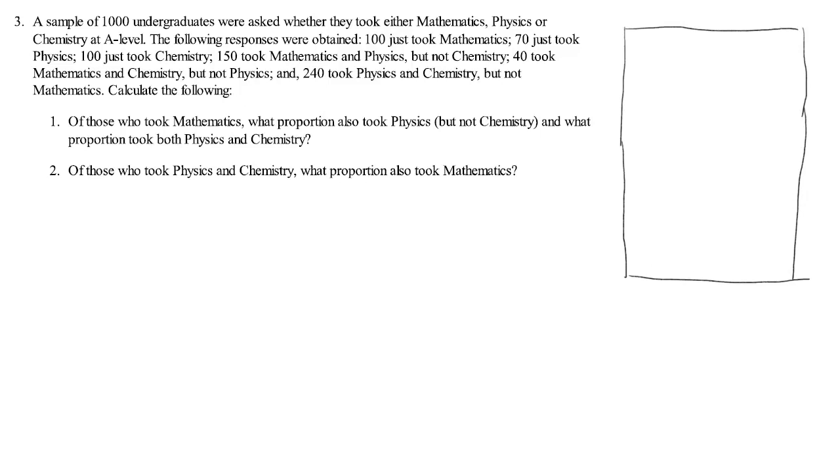So here's our space. We're asking students, a thousand, whether they took maths, physics or chemistry at A-level. So let's represent these three events by nice circles. And let this be maths, physics and chemistry.